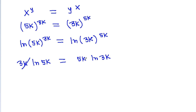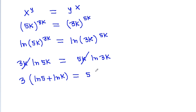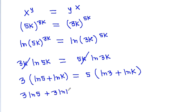k cancels from both sides, giving 3·ln(5k) is equal to 5·ln(3k). Expanding using logarithm rules: 3·ln(5k) = 3·ln(5) + 3·ln(k), and 5·ln(3k) = 5·ln(3) + 5·ln(k). So we get 3·ln(5) + 3·ln(k) equals 5·ln(3) + 5·ln(k).